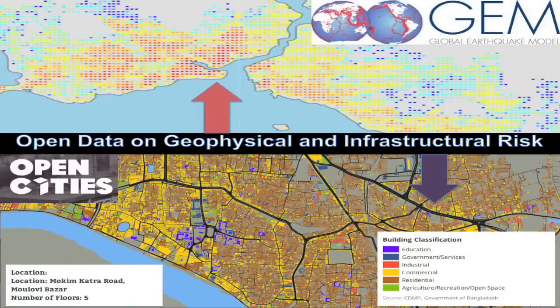Cloud computing can bring together amazing crowdsourced data sets, like Open City's map of buildings in Dhaka, with the science from the ivory tower, like the global earthquake model. We can superimpose these data sets and find areas most at risk for earthquakes.